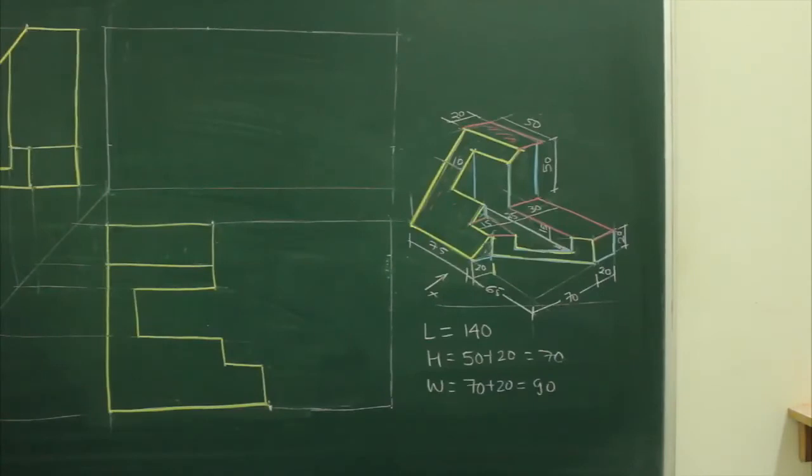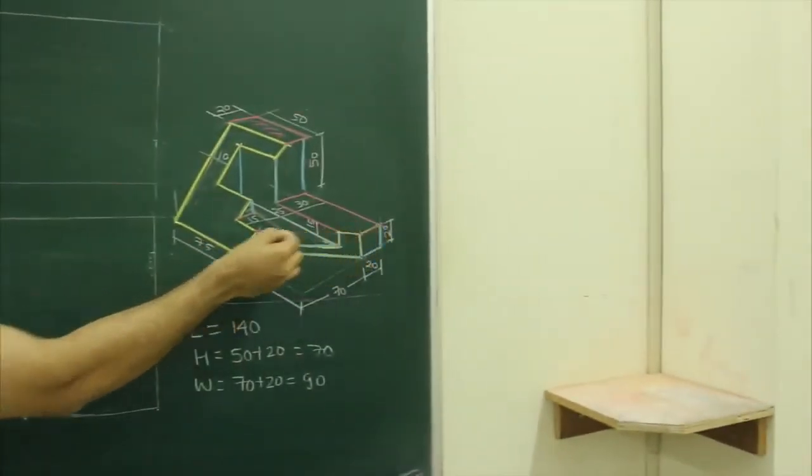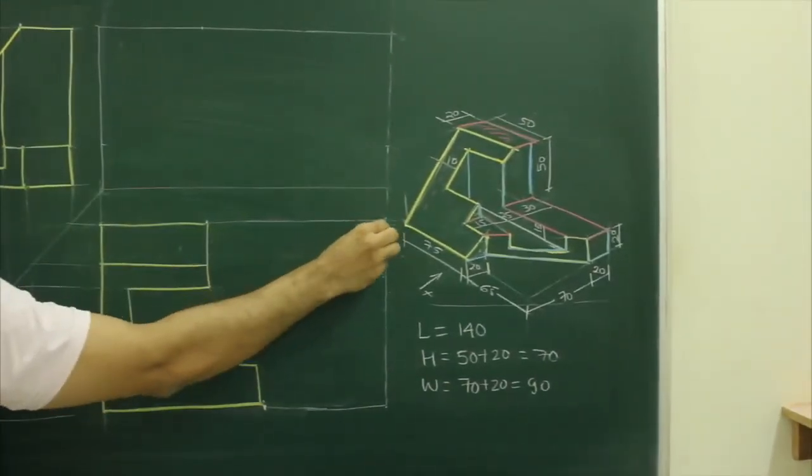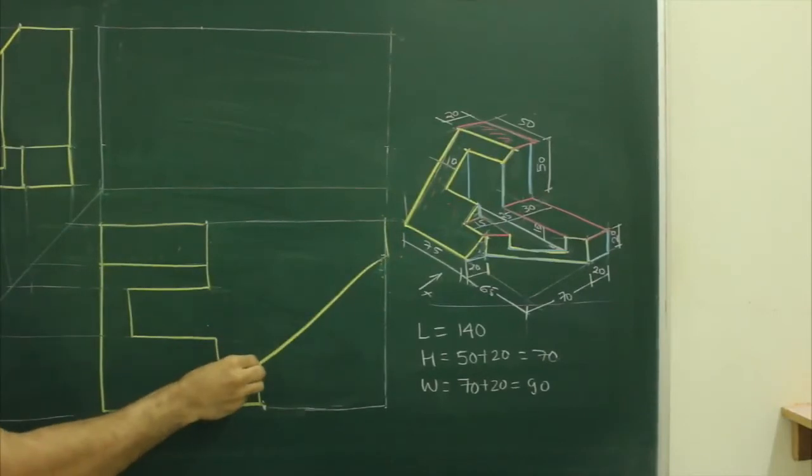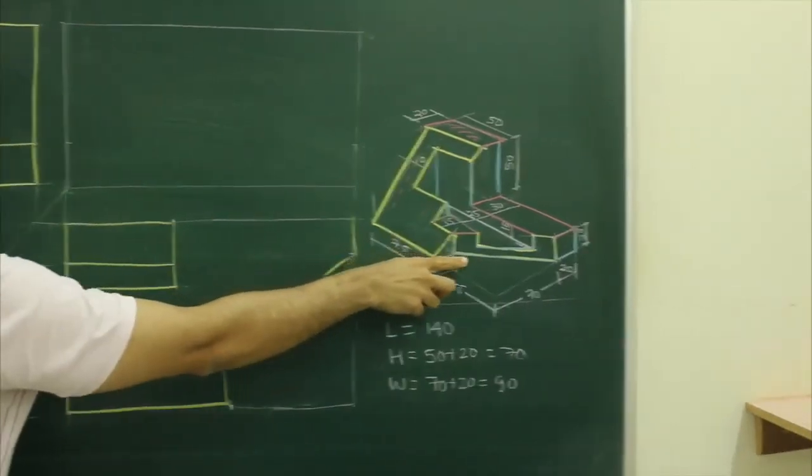After this, if you see top view, this part is 20. So what we need to do, we will take 20 from here and join this. This entire part is, in diagram if you see, is this part.